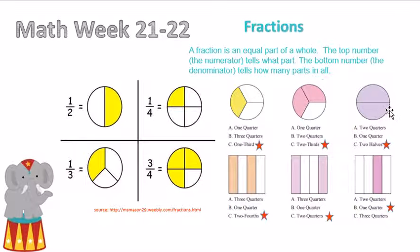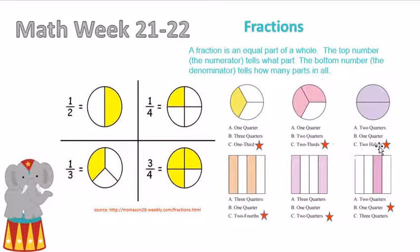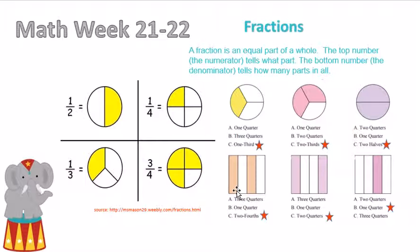On this piece, we have two in all, and we have two shaded in. So it will be two halves, because this is a half and this is a half. If it were just one shaded in, it would be one half, but since we have two shaded in, it's two halves.